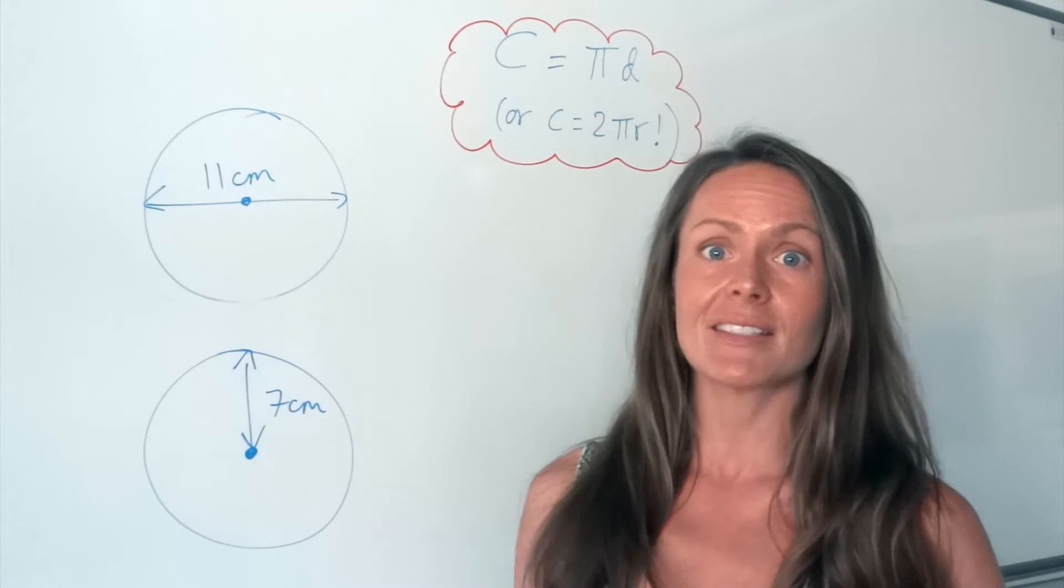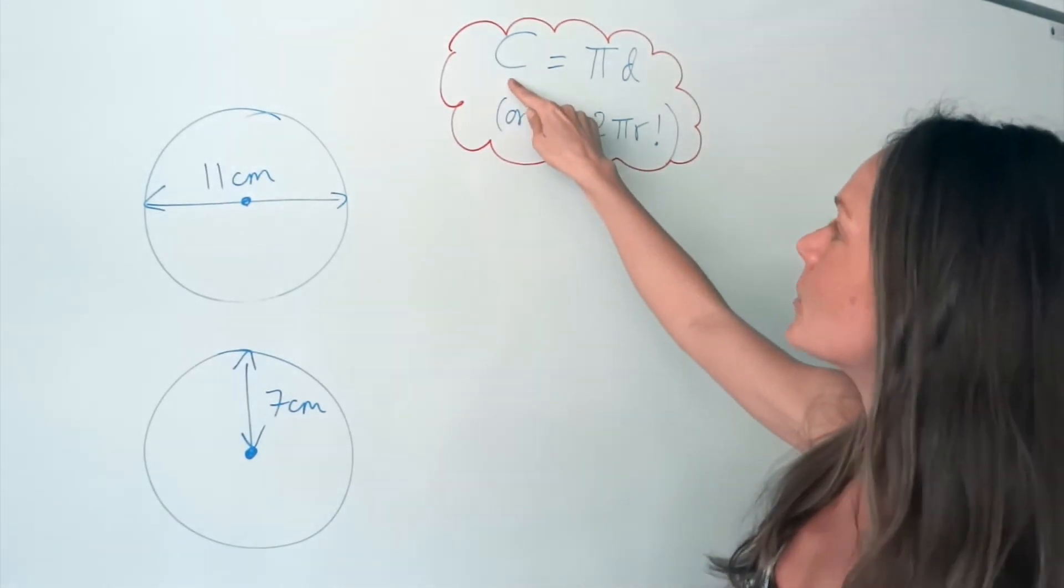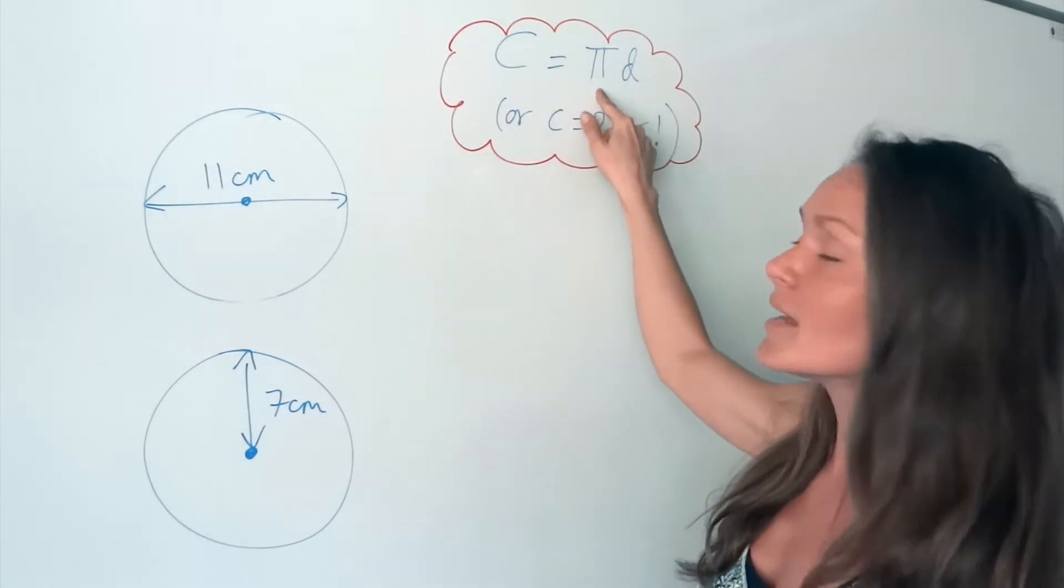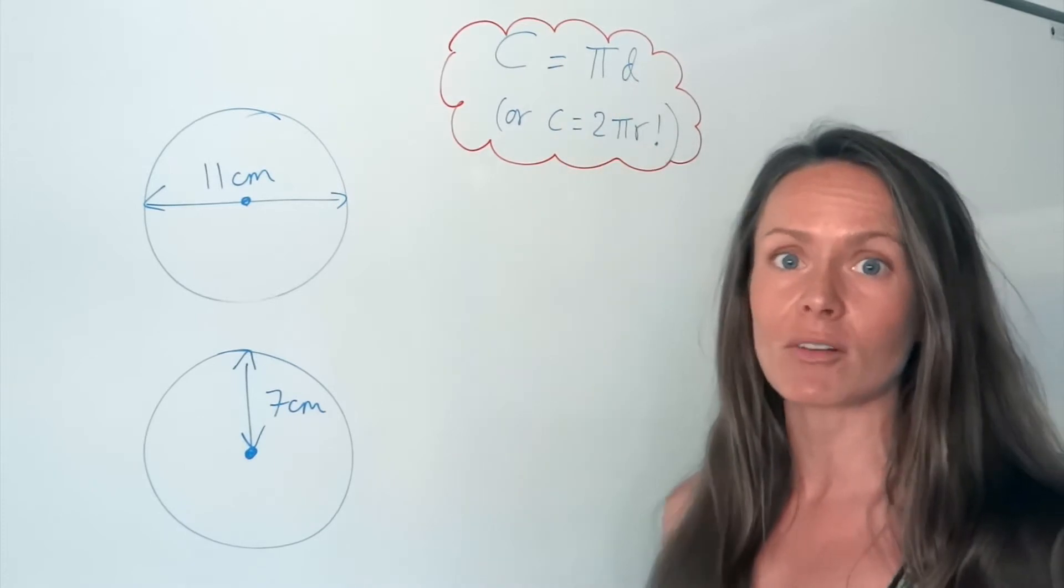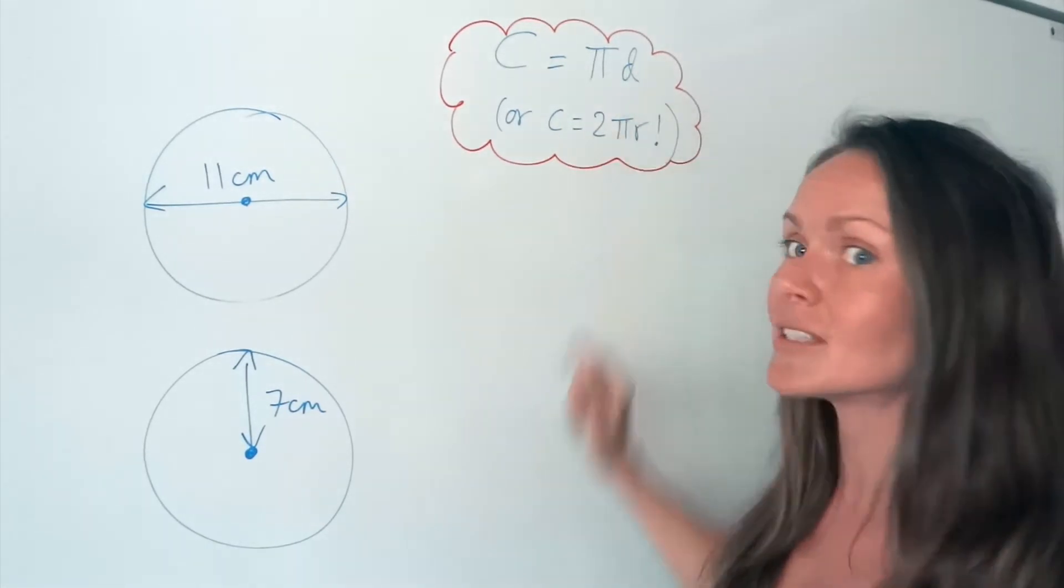When you're calculating circumference, you need to learn a formula. So here's the formula up here, c equals pi d. c is just for circumference, pi is an irrational number which is approximately equal to 3.142, and d is for the diameter.